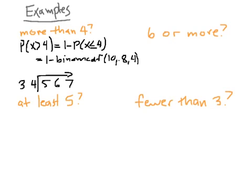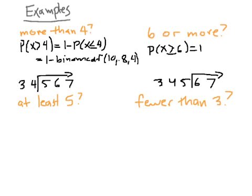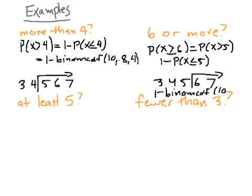How about 6 or more? 6 or more, if I did this, 3, 4, 5, 6, 7, where is 6 or more? That includes 6. So the probability of 6 or more, that's X is greater than or equal to 6, which is actually the same thing as X is greater than 5. So I have to rewrite this as 1 minus the probability that X is less than or equal to 5, and that would be 1 minus binomial CDF 10, 0.8, 5. See how drawing this little picture like this sometimes helps you figure that out.